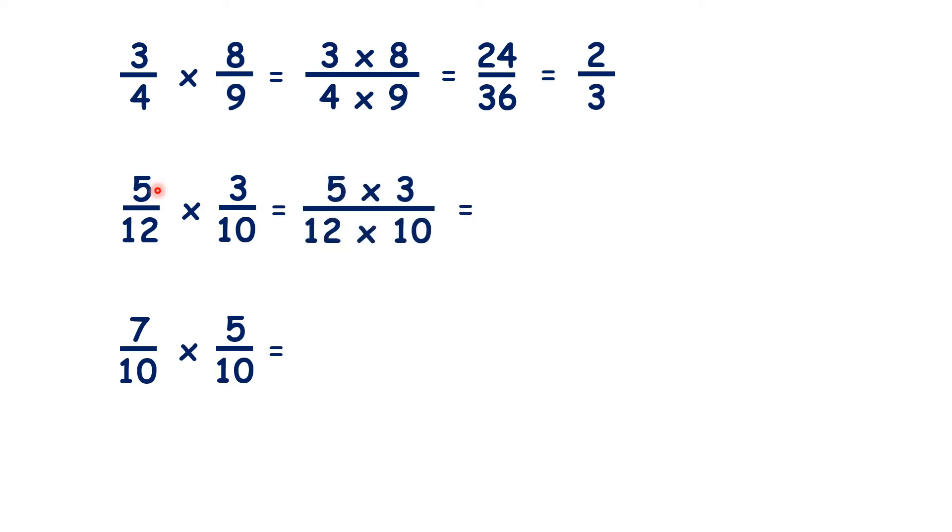So if we multiply the numerators and denominators, we get 15 over 120. But we can simplify this answer. We might spot straight away that 15 and 120 are both multiples of 5, so dividing both the numerator and denominator by 5 gives us 3 over 24.